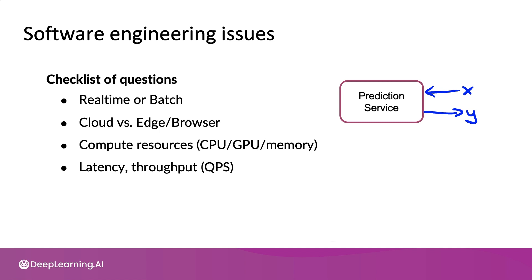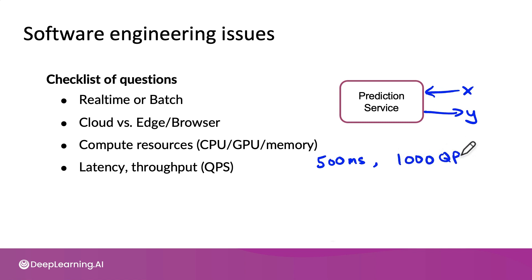Depending on your application, especially if it's real-time, latency and throughput — measured in terms of QPS, queries per second — will be other software engineering metrics you may need to hit. In speech recognition, it's not uncommon to want an answer back within 500 milliseconds, and of that 500-millisecond budget, you may allocate only 300 milliseconds to speech recognition. Throughput refers to how many queries per second you need to handle given your compute resources. For example, if your system needs to handle 1,000 queries per second, you need to spec out enough compute resources to hit that QPS requirement.